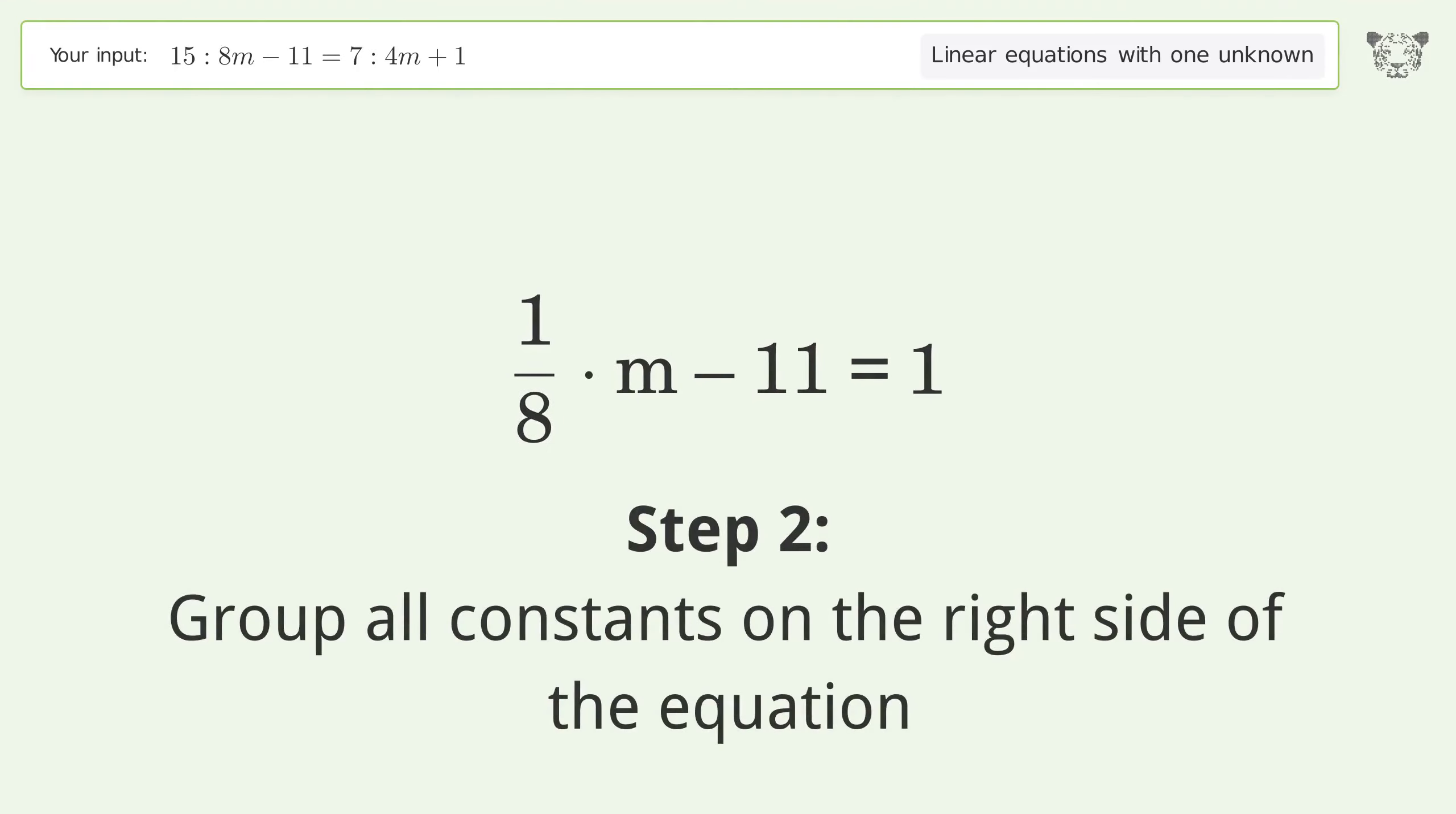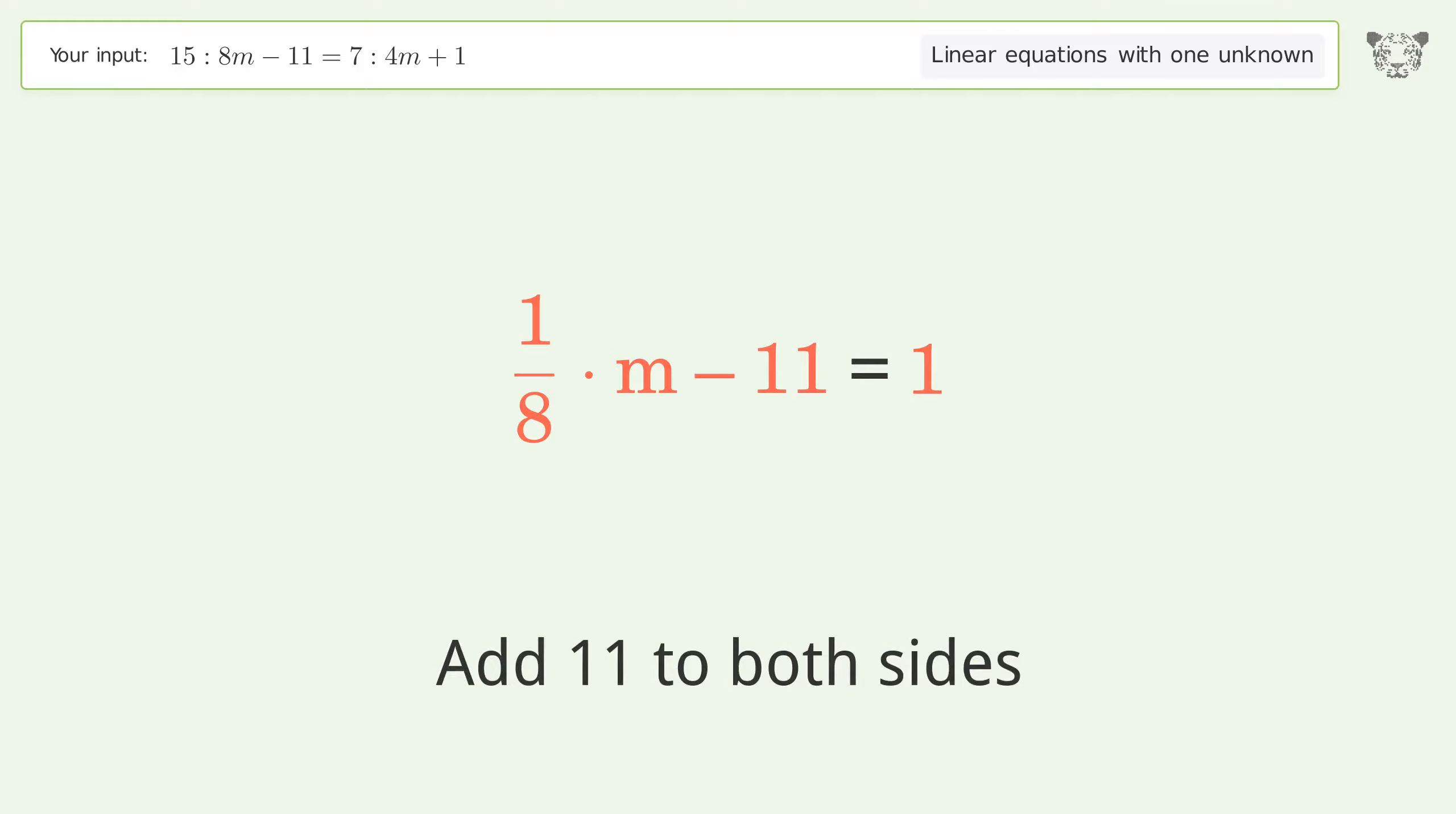Group all constants on the right side of the equation. Add 11 to both sides. Simplify the numerators.